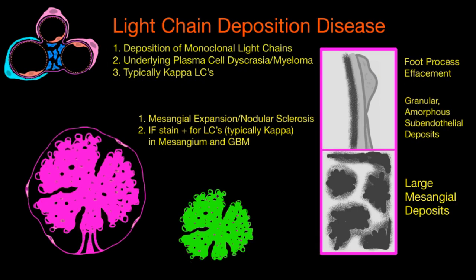Another disease causing nephrotic syndrome, related to amyloid in that it involves protein deposition in the kidney, is light chain deposition disease (LCDD). This is due to deposition of monoclonal light chains, usually from an underlying plasma cell dyscrasia or multiple myeloma — an abnormal plasma cell population overproducing light chains. When light chains are out of control, they accumulate in different parts of the kidney. Importantly, LCDD typically involves kappa light chains, in contrast to amyloid, which typically involves lambda light chains.